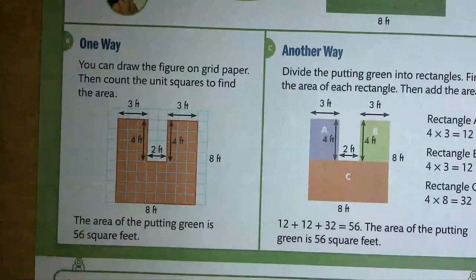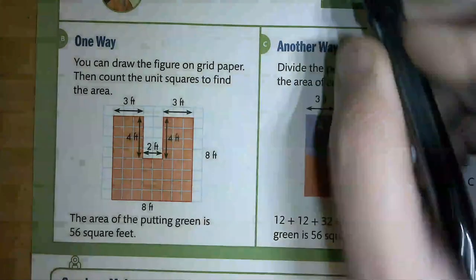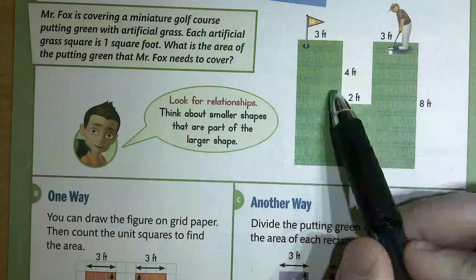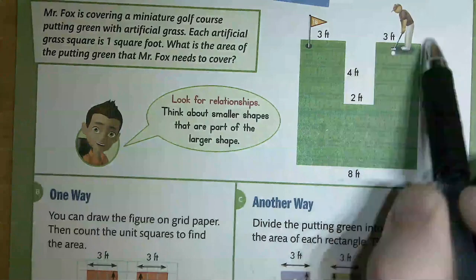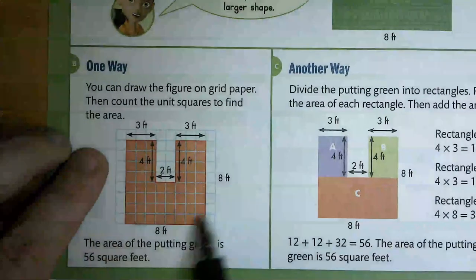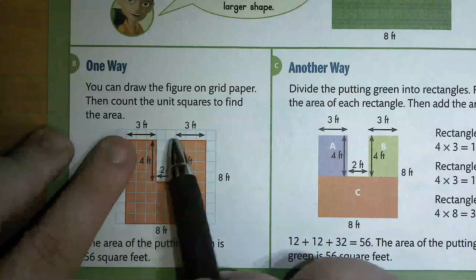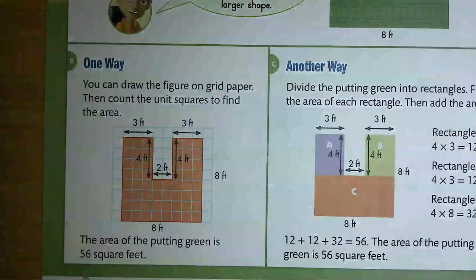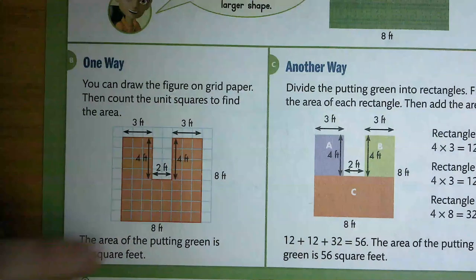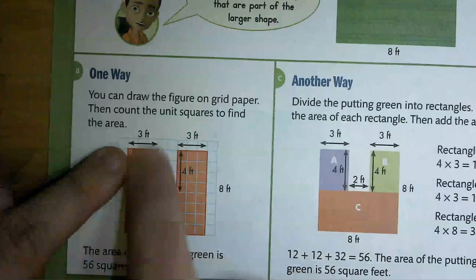Letter B says you can draw the figure on grid paper and then count the units to find it out. We would go three across, four down, two over, four up, and three across — and that's exactly what they did. They drew it on grid paper. But you might be thinking that is a lot of counting. So what's another way?